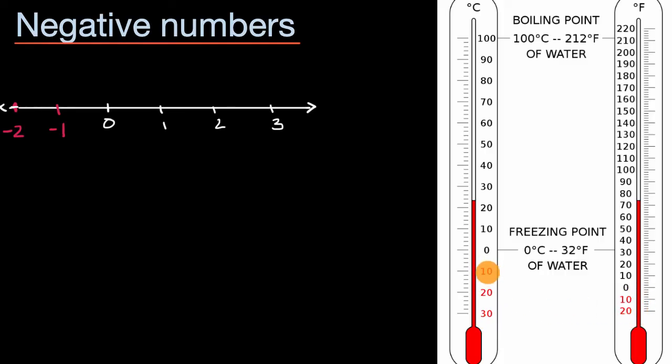On this thermometer, they just mark how far we are below zero with these red numbers, but really these are negative numbers. And we specify negative numbers by putting that negative sign right in front of it like that.